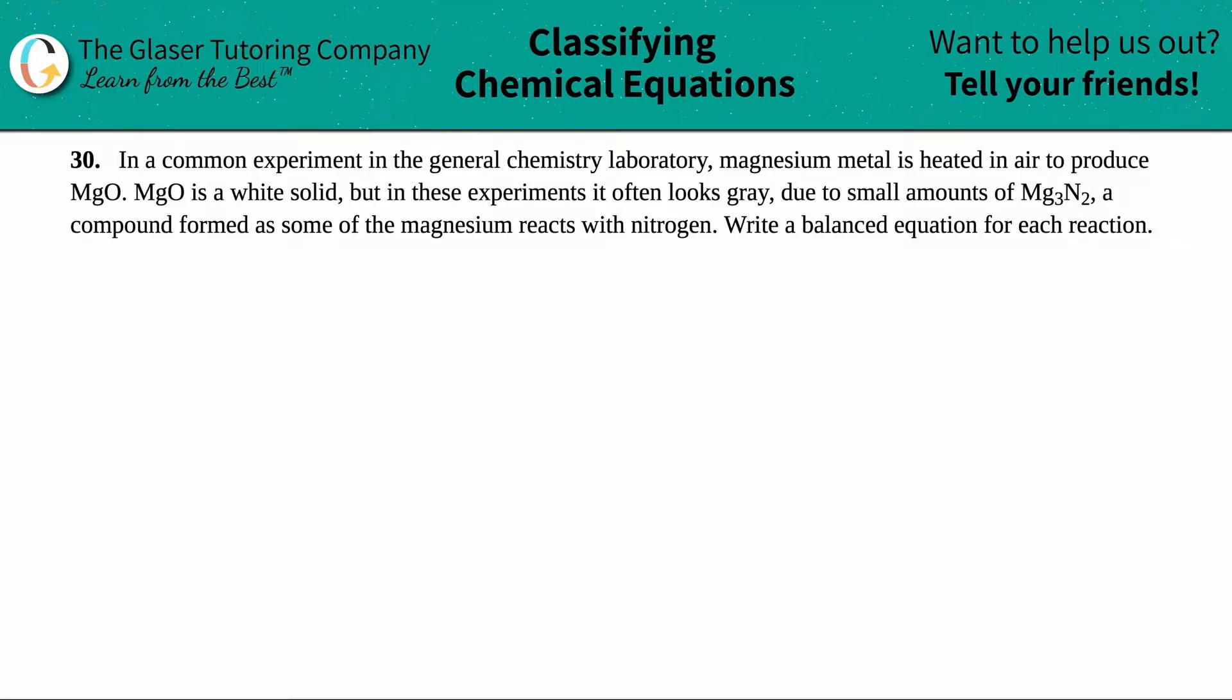30. In a common experiment in the general chemistry laboratory, magnesium metal is heated in air to produce MgO. MgO is a white solid, but in these experiments, it often looks gray due to small amounts of Mg3N2, a compound formed as some of the magnesium reacts with nitrogen. Write a balanced equation for each reaction.